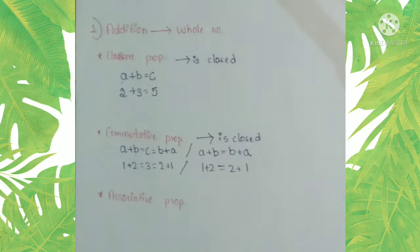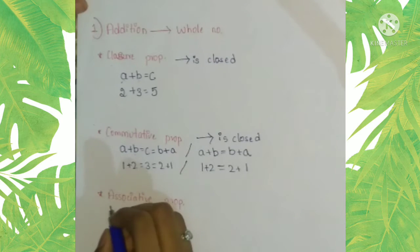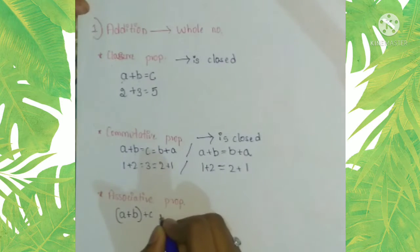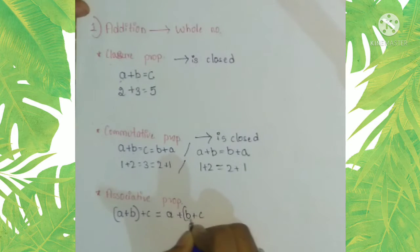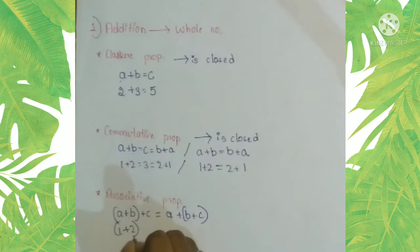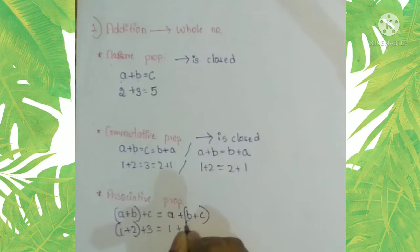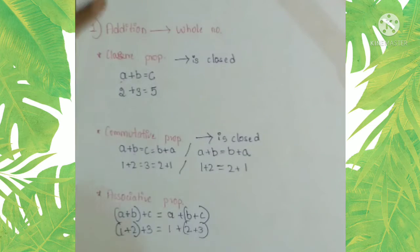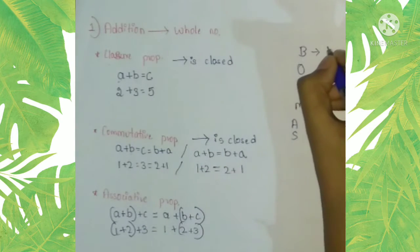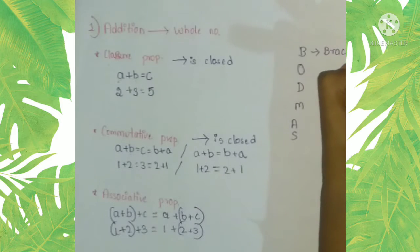Now let us check the associative property. It says: (a plus b) plus c equals a plus (b plus c). I'm going to take one instead of a, two instead of b, and three instead of c. According to BODMAS rule, we should always simplify the brackets first, then multiplication, then division, then addition, then subtraction.